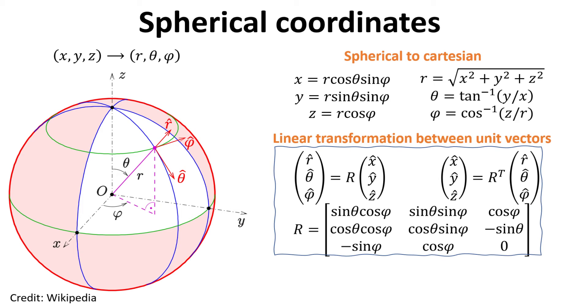The unit vector R hat is normal to the surface of the sphere, and the unit vectors theta and phi hat are tangent to the surface of the sphere. Theta hat points in the longitude direction, while phi points in the latitude direction. These spherical unit vectors are related to their Cartesian unit vectors via the rotation matrix R, as shown.